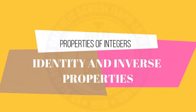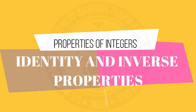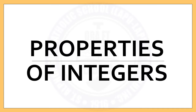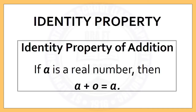Now, let's discuss the third property of integers. Identity Property has two kinds: Identity Property of Addition and Identity Property of Multiplication.